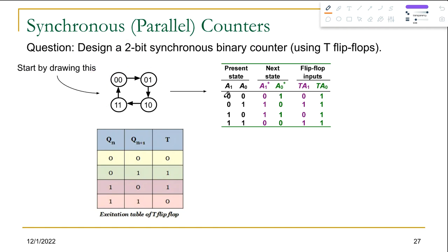Once we have the state diagram, we can build the state table. We can see that if the present state is 00 then the next state is 01; if the present state is 01 then the next state is 10; if the present state is 10 then the next state is 11; and if the present state is 11 then the next state is 00. Here is the state table.